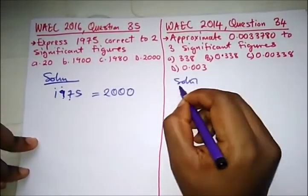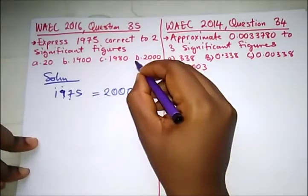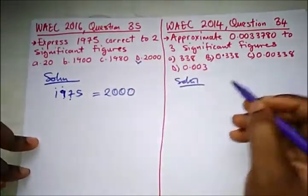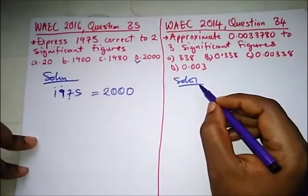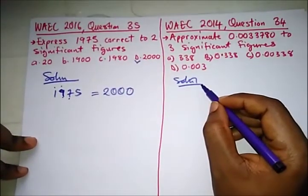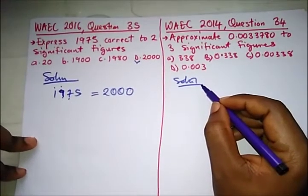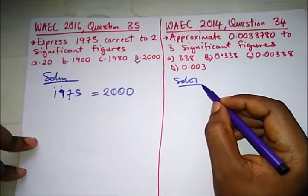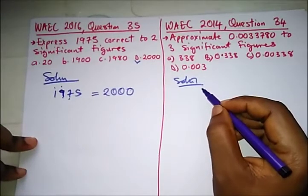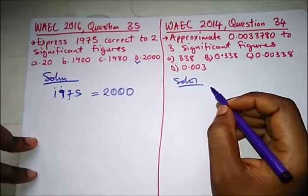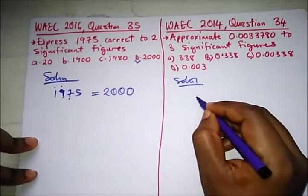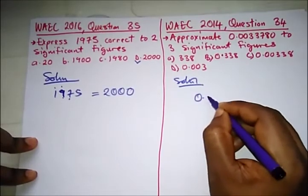So adding one to nineteen you get two thousand. The correct option here is option D. This next question is from WAEC 2014: approximate 0.003378 to three significant figures. Let's write this down.